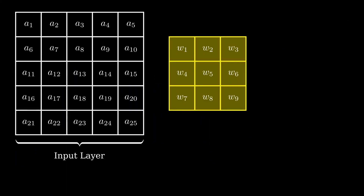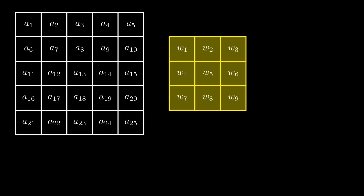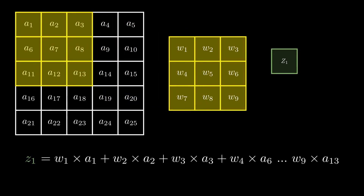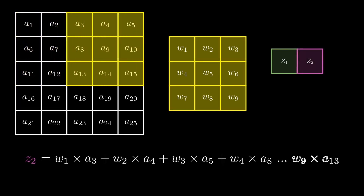We start with the input layer and the kernel. The kernel is often referred to as the filter. During a regular forward propagation, we start off in the left corner of the input layer. We multiply the weights in the kernel with the corresponding values in the input layer. The output is Z1, and the formula can be seen below. This is the first step in the convolution. Then we slide the kernel two steps to the right and multiply the weights with the corresponding values. Notice that we use a stride of two — this simply means that we move the kernel two steps at a time. This outputs Z2, and this is the second step in the convolution.